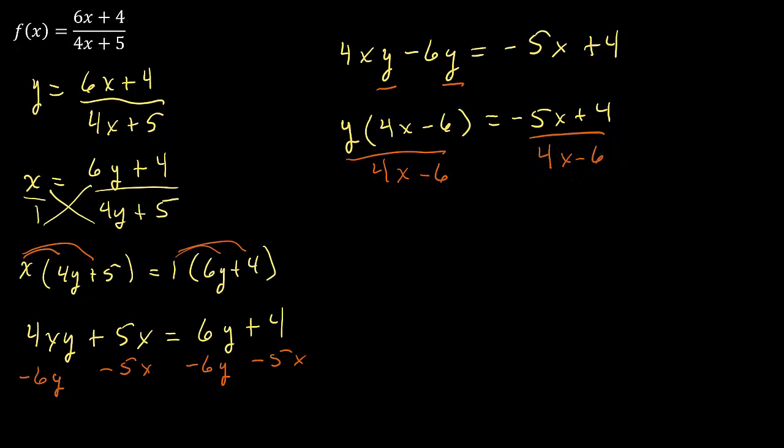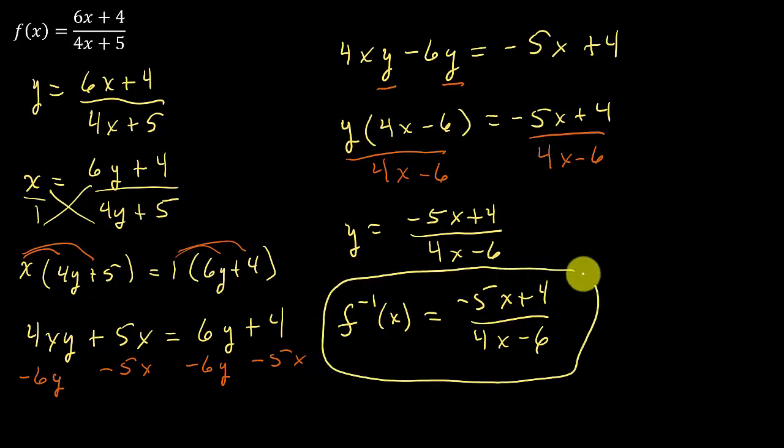And that will leave us with y equals negative 5x plus 4 over 4x minus 6. And then once you solve for y, you just change the y to the f inverse. And so that's over 4x minus 6. And there's your inverse.